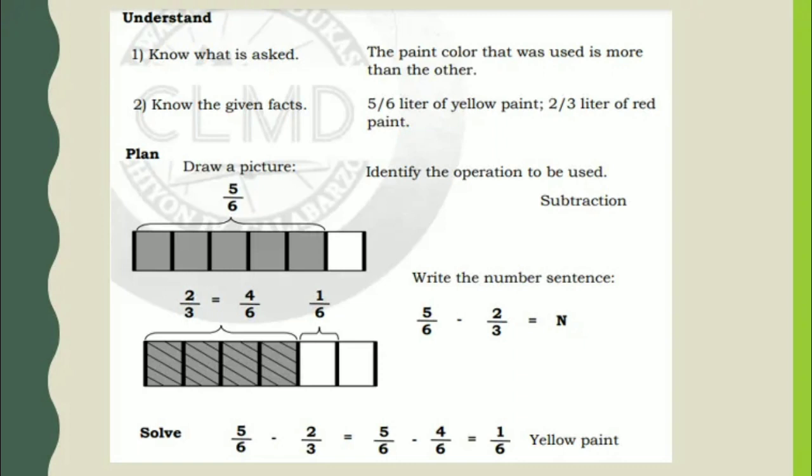Identify the operation to be used. In this problem, we will use subtraction. Then, write the number sentence. 5 sixths minus 2 thirds equals n.